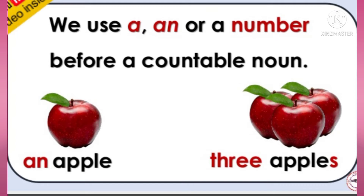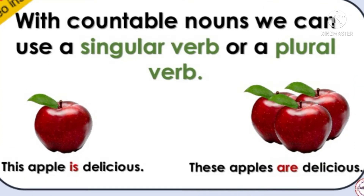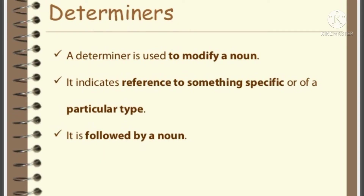We can use a number or an article — a, an, the, or one, two — before countable nouns. With countable nouns we use singular or plural verbs according to the form. Before countable nouns, a determiner can be used. A determiner is used to modify a noun; it indicates reference to something specific or of a particular type that is followed by a noun.